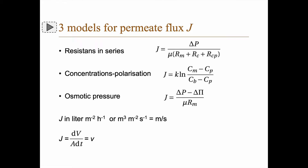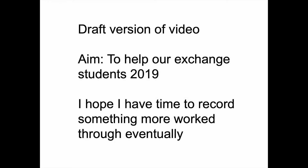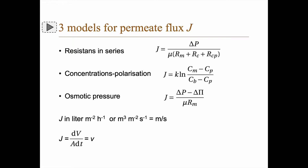We have talked about membrane filtration, feed, retentate, and permeate and what to find in the different flows. Now let's talk about different models for permeate flux. In this course we will talk about the resistance-in-series model, concentration polarization, and the osmotic pressure model. We will use the letter J to denote the flow in liters per square meter per hour, or in SI units cubic meters per square meter per second.